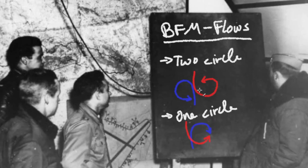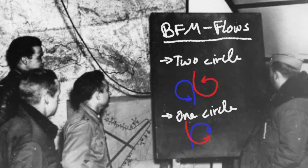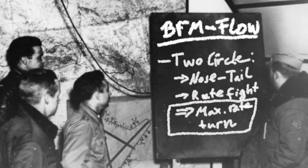That's what is meant by the expression BFM flows: the situation where two aircraft are merging and, depending on how they orient themselves toward one another, whether in a two circle flow or a one circle flow, we have to apply different techniques to win the respective scenario. There are only these two scenarios — no other scenario exists. We can either turn into the same direction, giving us a two circle flow, or turn into opposite directions, giving us a one circle flow.